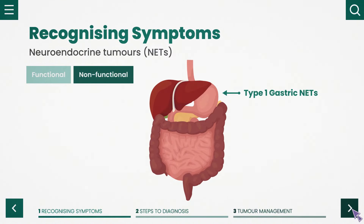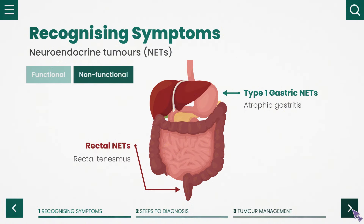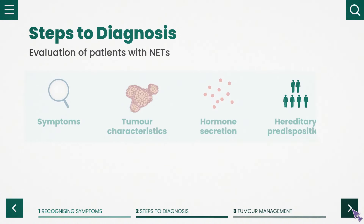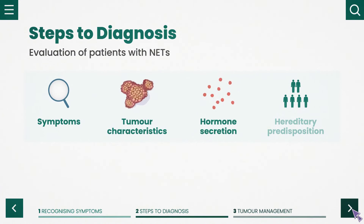Patients with type 1 gastric NETs present with symptoms consistent with atrophic gastritis, and those with rectal NETs often present with rectal tenesmus and changes in bowel habits, which can be mistaken for other diseases. Full evaluation of patients with NETs includes assessing symptoms, tumour characteristics, hormone secretion and hereditary predisposition.